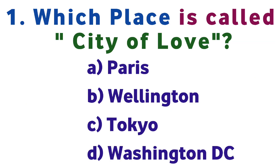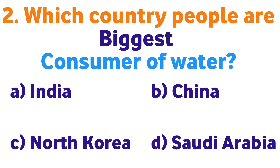Question number one: Which place is called City of Love? Option A: Paris, B: Wellington, C: Tokyo, D: Washington D.C. Correct answer is A: Paris.